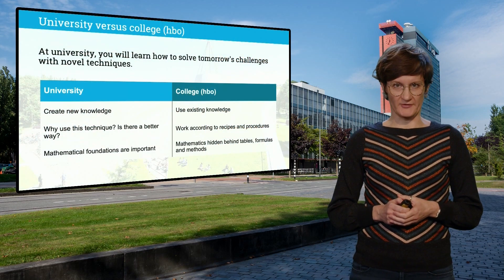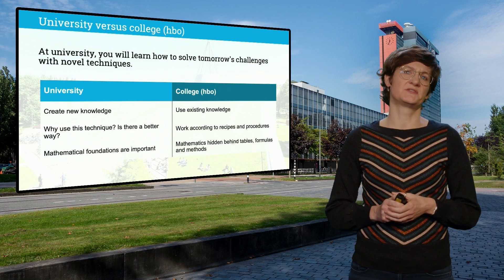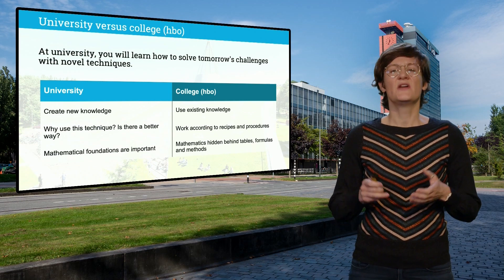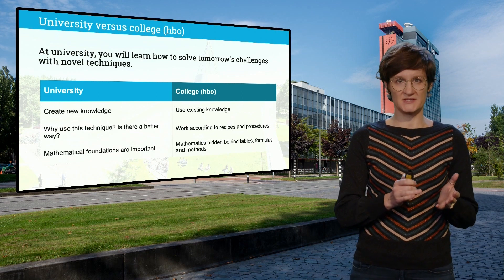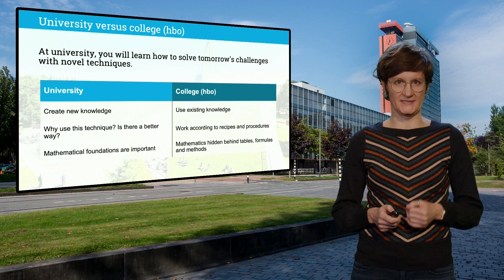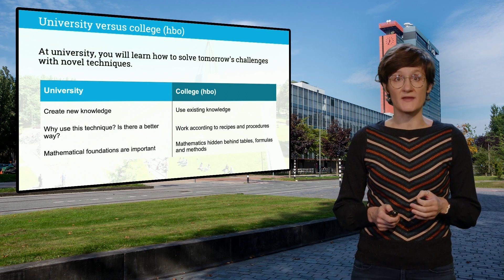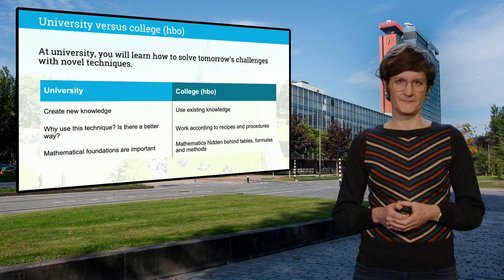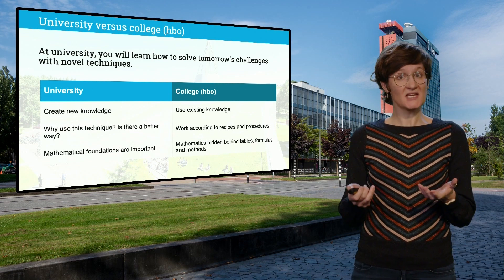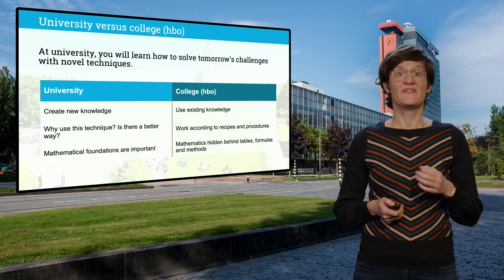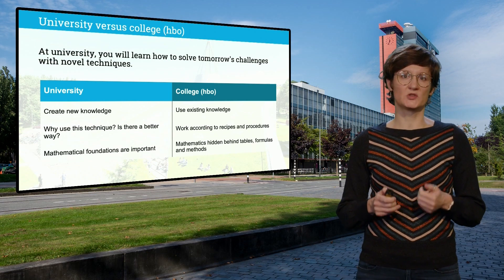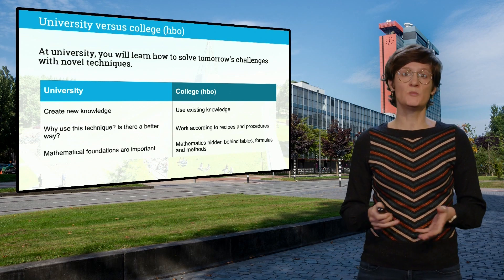You might have decided to study computer science and engineering, but might be wondering whether you want to go to university or college, or HBO as we call it in the Netherlands. There are some important differences between studying computer science and engineering at the university versus college level. At TU Delft, you will learn to solve tomorrow's challenges with novel techniques. However, in order to be able to do that, you first need to learn a lot about the theories. You will ask yourself questions such as: why do we do this in this manner? Can I do this in a better way? And can I prove that my current approach is optimal? Therefore, mathematical foundations are important. At a college, you will primarily use existing knowledge and work according to recipes and procedures. The mathematics is hidden behind tables, formulas and methods.